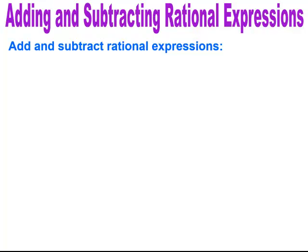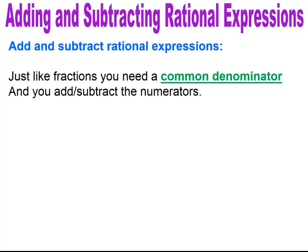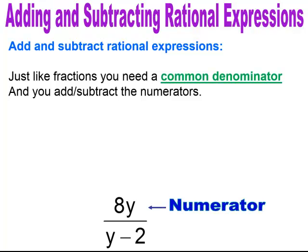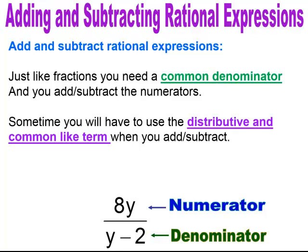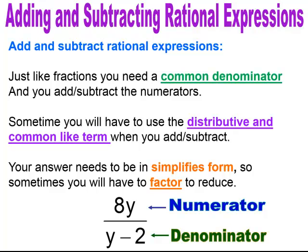Add and subtract rational expressions. Just like fractions, you need a common denominator and you add or subtract the numerators. So in this example, the numerator is 8y and the denominator is y minus 2. Sometimes when you're adding and subtracting rational expressions, you'll have to use the distributive property and combine like terms. Lastly, your answer needs to be in simplest form, so sometimes you will have to factor to reduce.